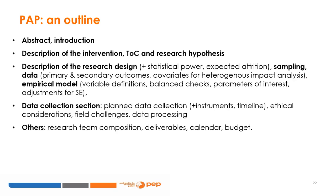3. Description of the research design, including statistical power, expected attrition, sampling data, primary and secondary outcomes, covariates for heterogeneous impact analysis, empirical model, variable definitions, balance checks, parameters of interest, and adjustments for standard errors. 4. Data collection section covering planned data collection, instruments, timeline, ethical considerations, field challenges, and data processing. 5. Others, including research team composition, deliverables, calendar, and budget. As you can see, the PAP already includes many of the elements that will be expected in the research article — parts 1, 2, 3, and some of part 4.